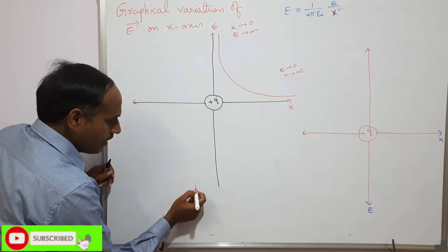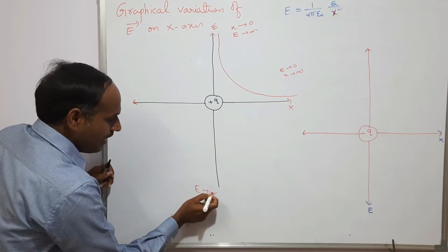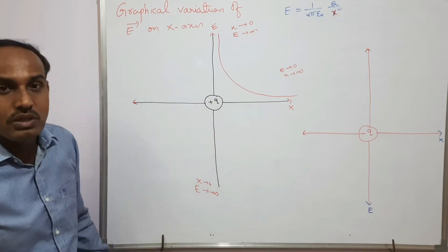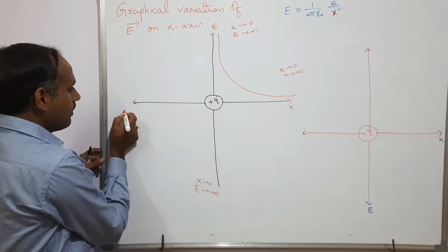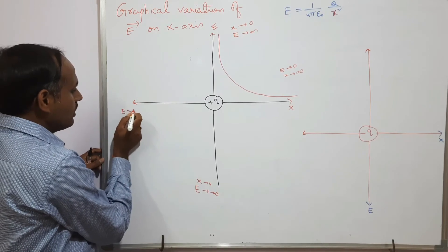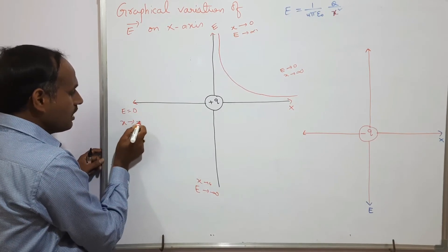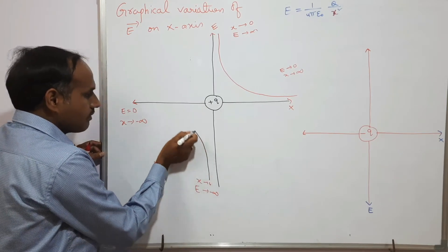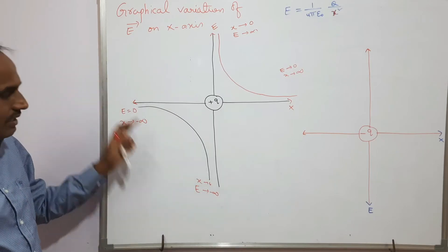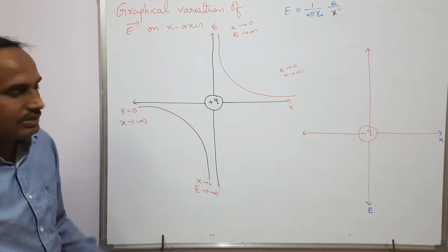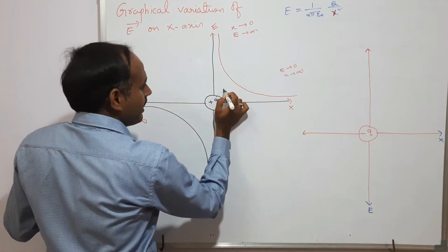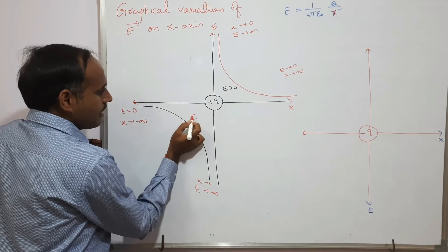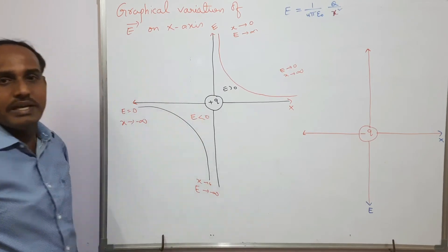Coming to the other side: when x tends to 0 from the negative side, E tends to minus infinity. Then as x tends to minus infinity, E tends to 0, giving a symmetric curve on the left side. In the positive x region, E is greater than 0, and in the negative x region, E is less than 0 — indicating the opposite direction.